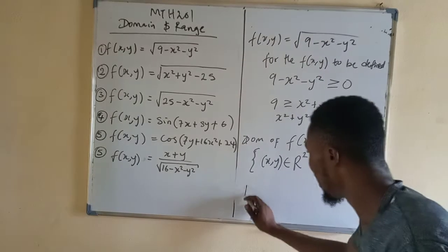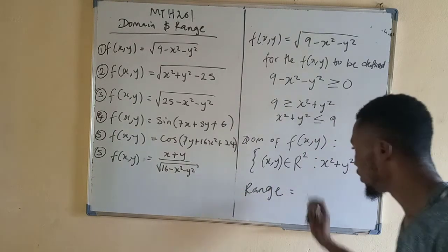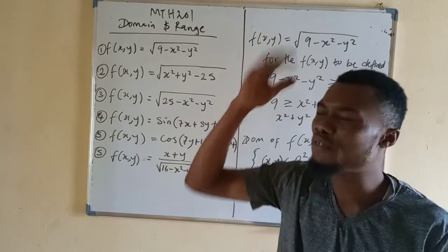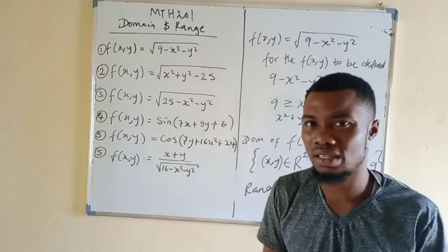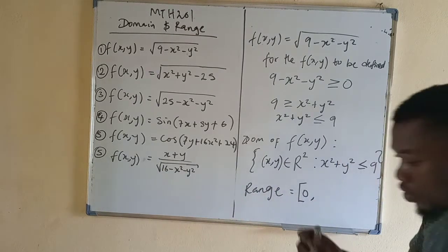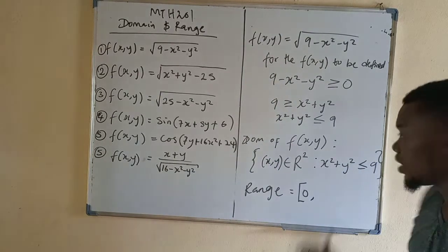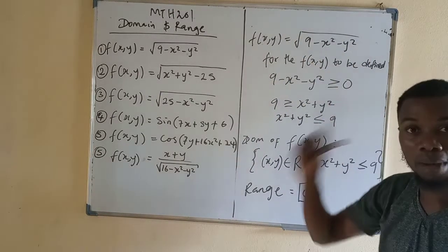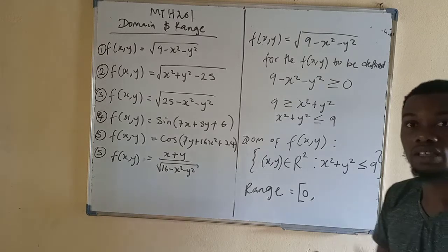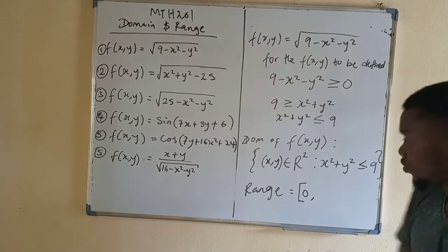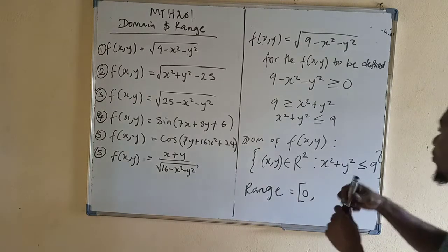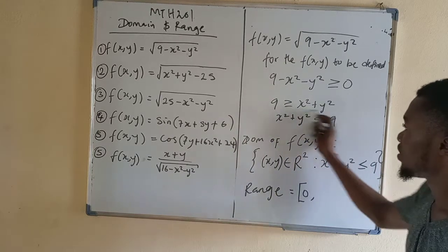So how do we find the range? For every square root function, the least answer it can produce is zero. Whenever you see a square root function, the range must start from zero. Now, will it tend to infinity or will it cut at a point? A square root can never generate a negative answer. So the range starts at zero — but where does it go?